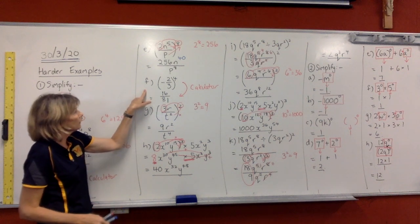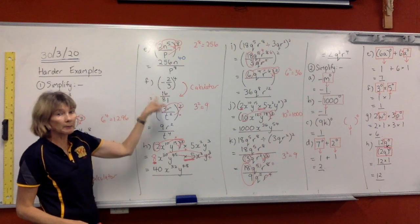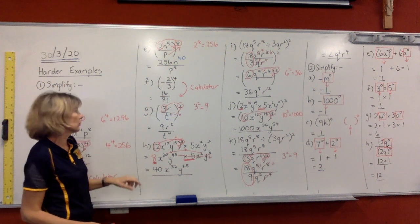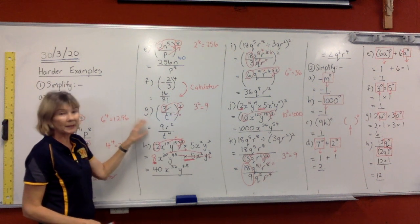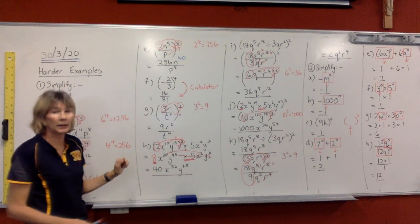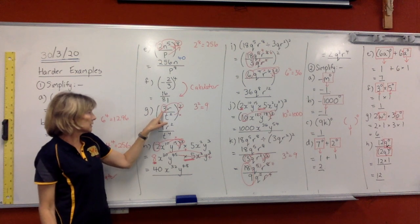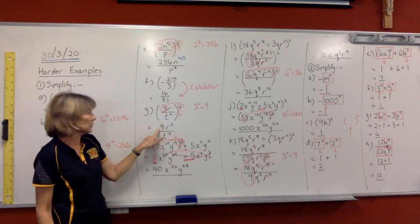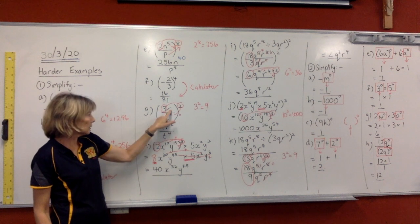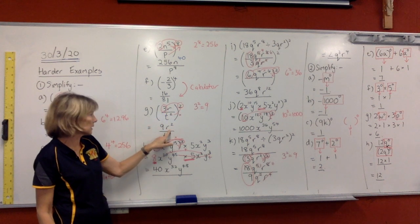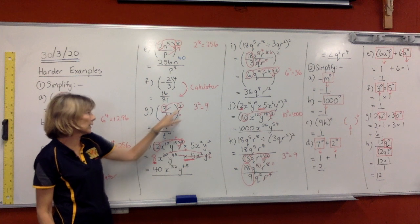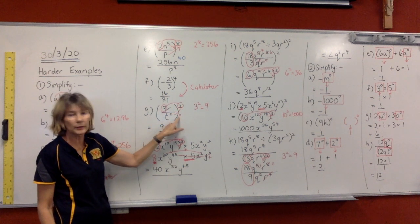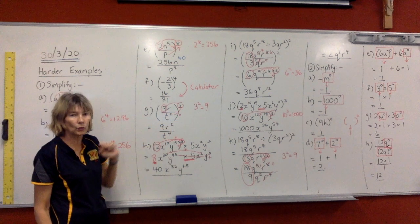In part F, this one's a straight-out number question, so just use your calculator and let it do the work for you. This one we're back to something with letters, so you can't use a calculator for everything. This is 3 to the power of 2 — your calculator will tell you that's 9. This has to be to the power, so it's R squared. And down here, we have an index inside and outside a bracket — multiply those indices and you get T to the power of 4.